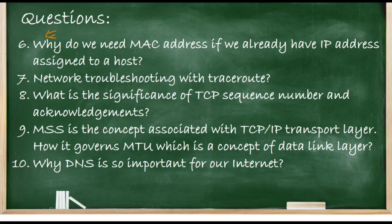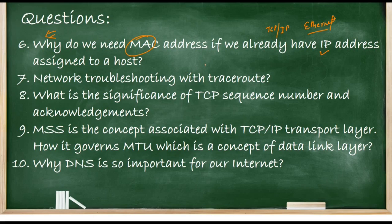The sixth question, which is a pain point for most people, is: why do we need a MAC address if we already have an IP address assigned? Although many explanations exist, the exact answer isn't easy to find. It requires a complete understanding of the TCP/IP model's layered approach and how Ethernet works. Question seven covers traceroute — troubleshooting is one of the most important tasks of a network engineer, and it would be great to know exactly how traceroute works.